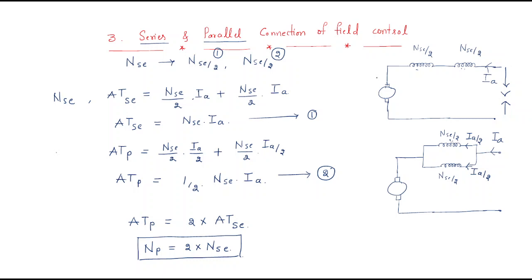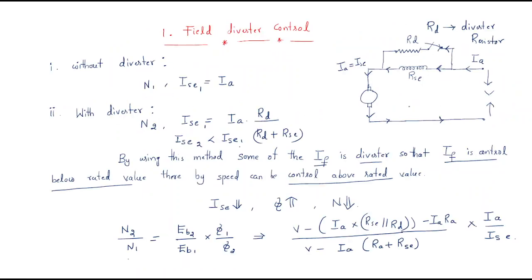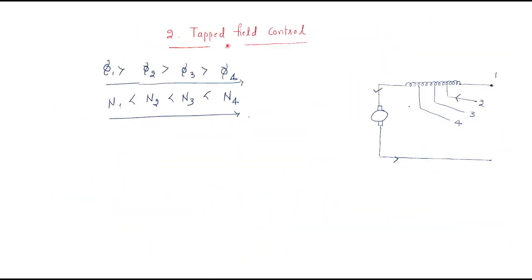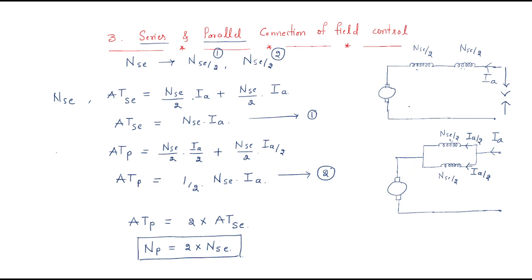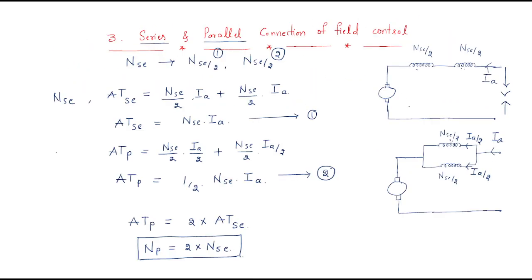By connecting the series and parallel connection of field turns and comparing with dividing the turns, speed can be increased. So these are the three types of field control for series motors: field diverter control, tapped field control, and series and parallel connection of field control. I hope all of you understand the session. Thank you.